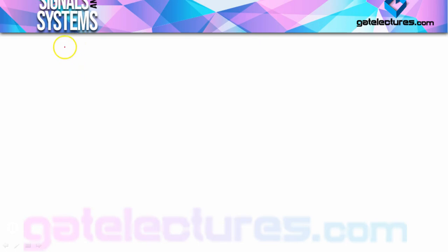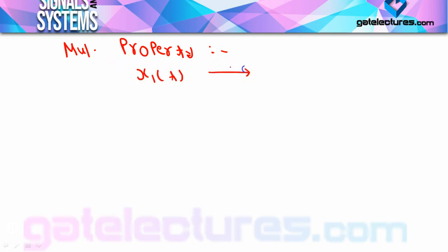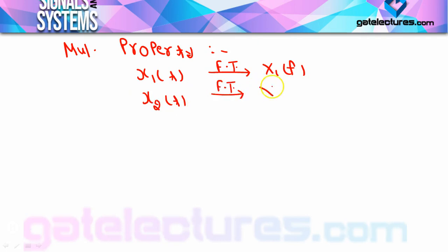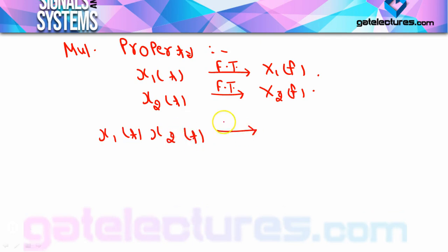So first, I will start with the multiplication property of Fourier transform. Suppose that you have X1(T) as a signal whose Fourier transform is X1(F), and X2(T) is another signal whose Fourier transform is X2(F). Now, if X1(T) and X2(T) are multiplied together, in the frequency domain this will be X1(F) convolved with X2(F).